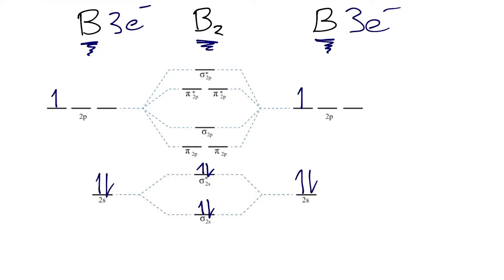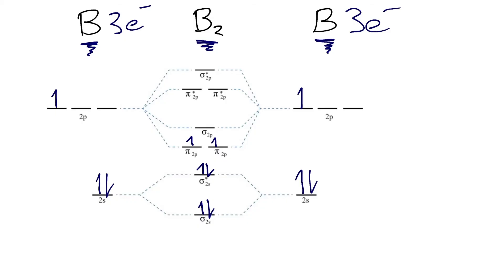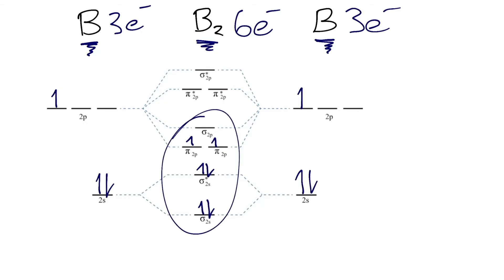We have two electrons, so each of the pi 2p molecular orbitals, which are the lowest in energy, will get one electron, because we have to fill each one with one electron before any of them can have two. This is our completed molecular orbital diagram for the B2 molecule. As a check, we know three electrons come from each boron atom, giving six total electrons for B2, and counting all the electrons in our molecular orbitals confirms we have six.